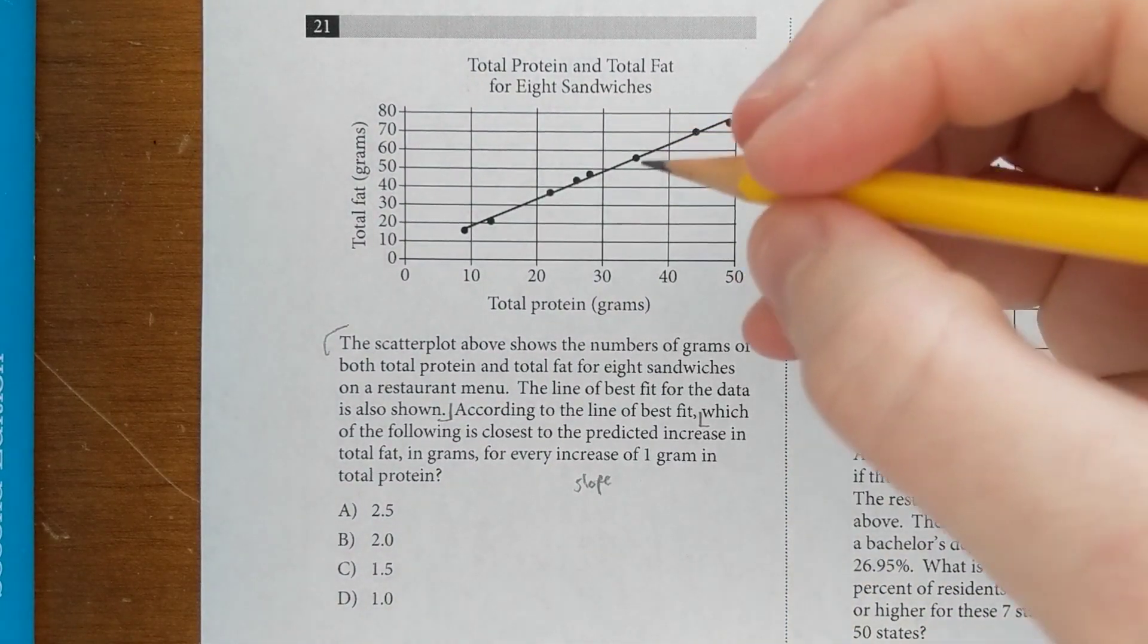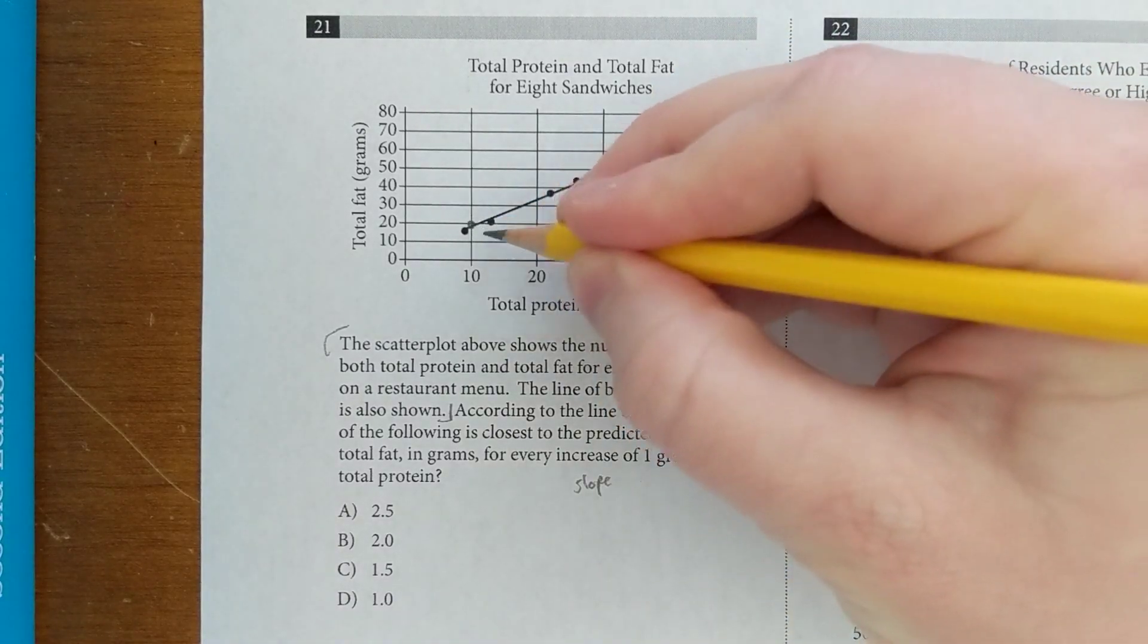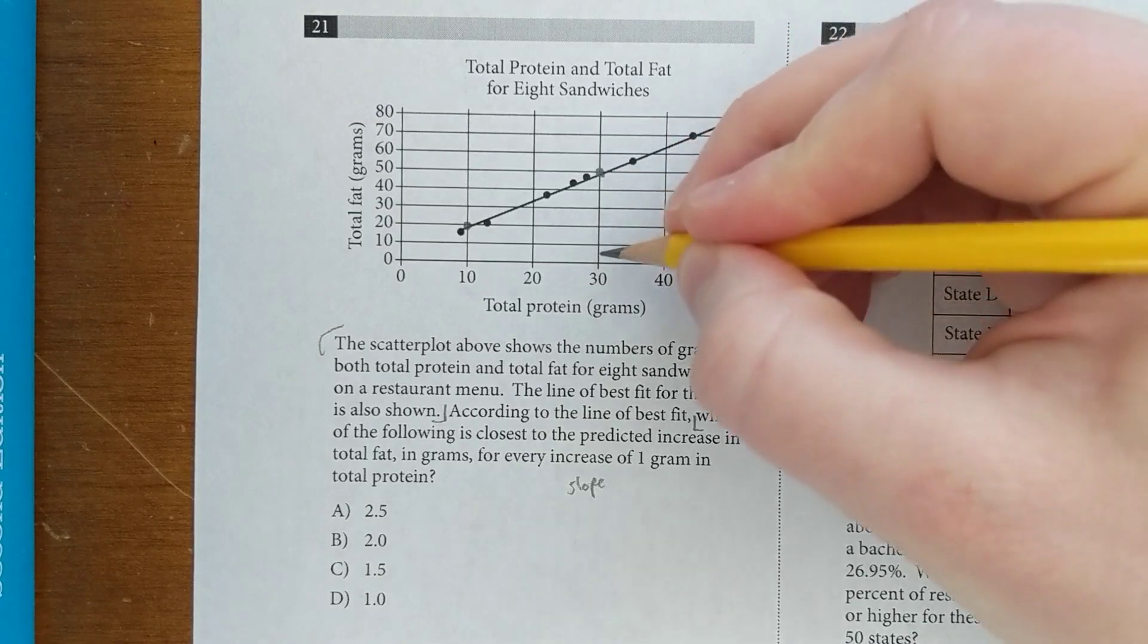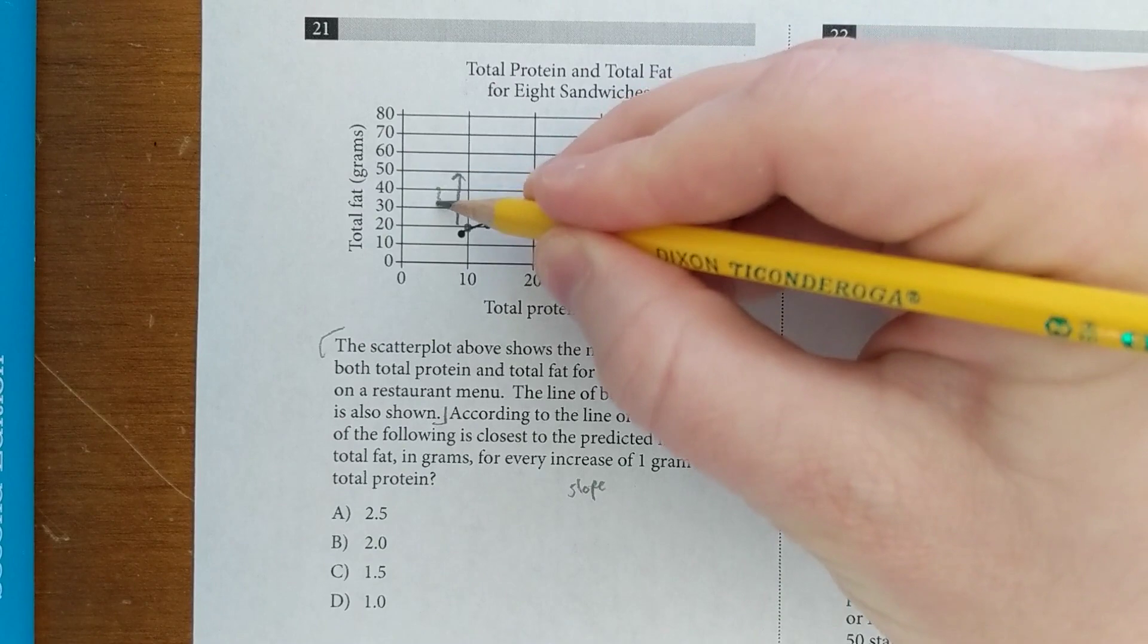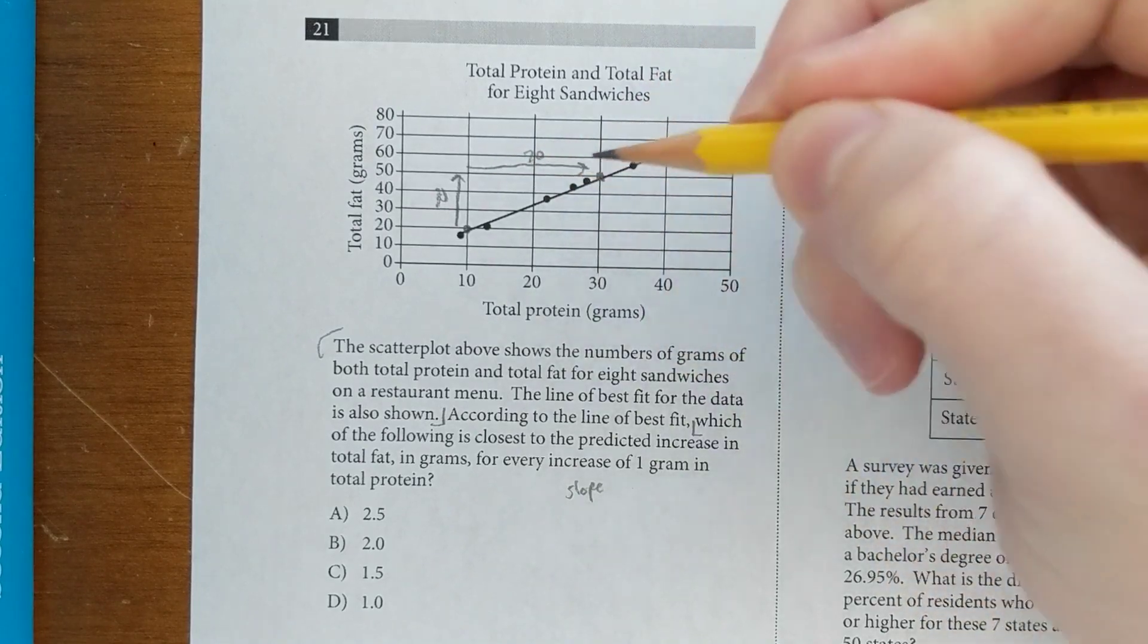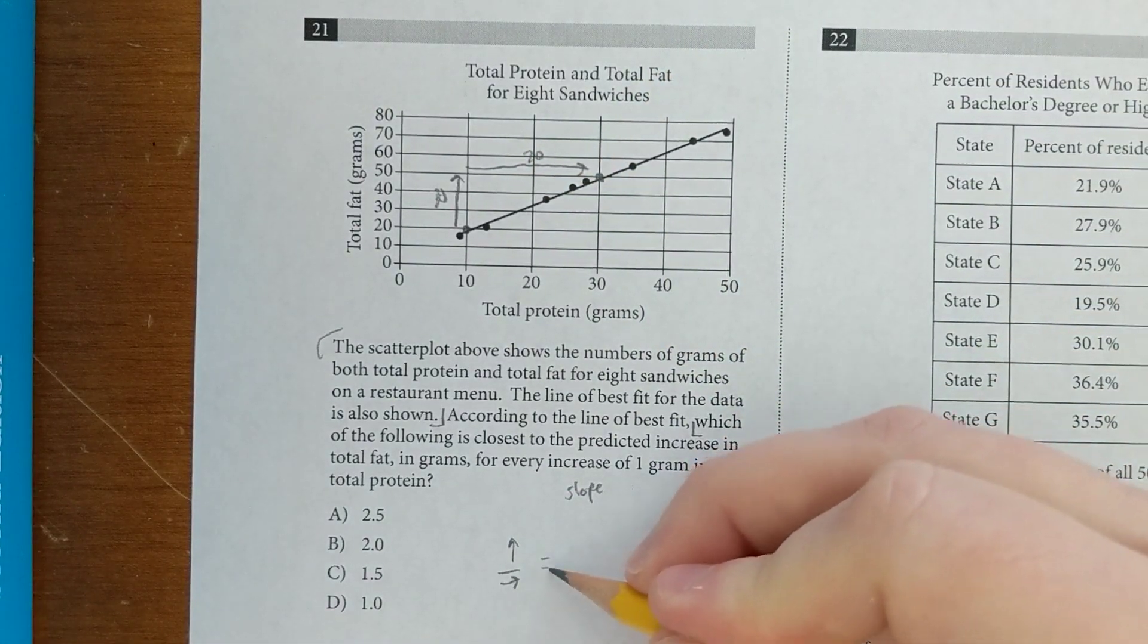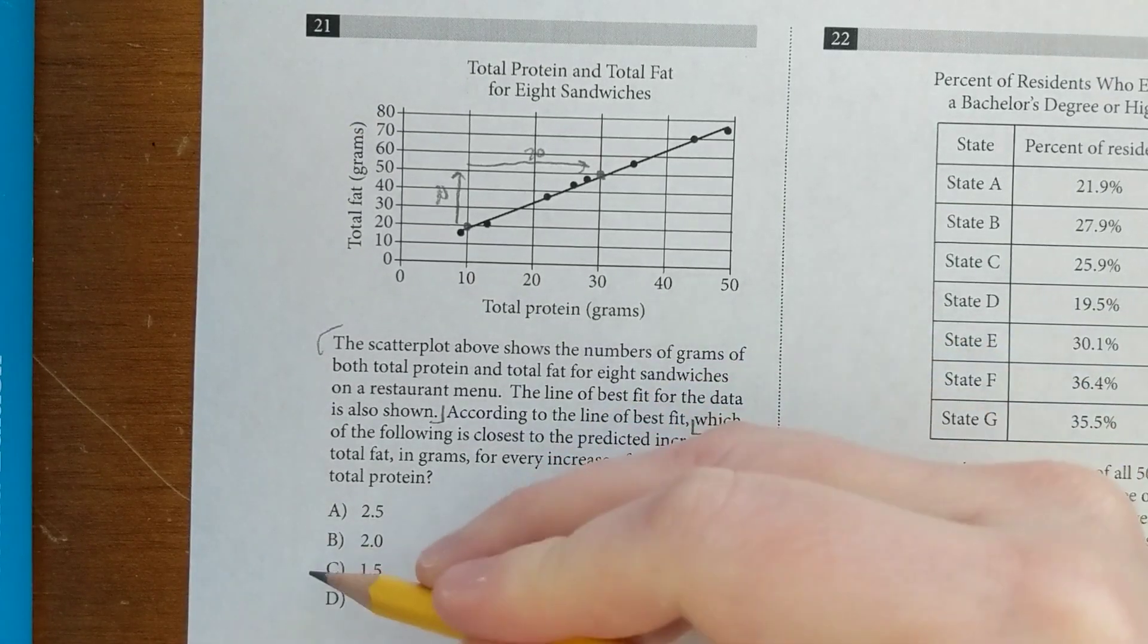So we're just gonna go up here and pick two reasonable points on the line of best fit. I'll pick this one which is right around 10, 20, and I'll pick this one which is right around 30, 50. It's going up about 30 from 20 to 50, and it's going over about 20 from 10 to 30. So you know, slope is just rise over run. So 30 over 20, that's 1.5.